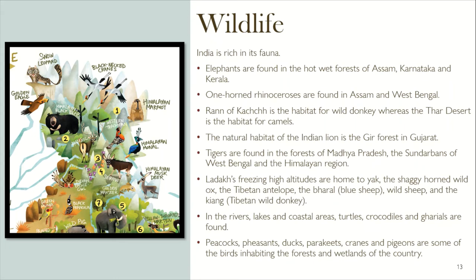Wildlife: India is rich in its fauna. Elephants are found in the hot wet forests of Assam, Karnataka, and Kerala. One-horned rhinoceros are found in Assam and West Bengal. The Rann of Kutch is the habitat for wild donkeys, while the Thar Desert is the habitat for camels. The natural habitat of the Indian lion is the Gir forest in Gujarat. Tigers are found in the forests of Madhya Pradesh, the Sundarbans of West Bengal, and the Himalayan region. Ladakh's freezing high altitudes are home to yak, Tibetan antelope, blue sheep, and the Tibetan wild donkey. In rivers, lakes, and coastal areas, turtles, crocodiles, and gharials are found. Peacocks, pigeons, ducks, parakeets, and cranes are some of the birds inhabiting these forests and wetlands.